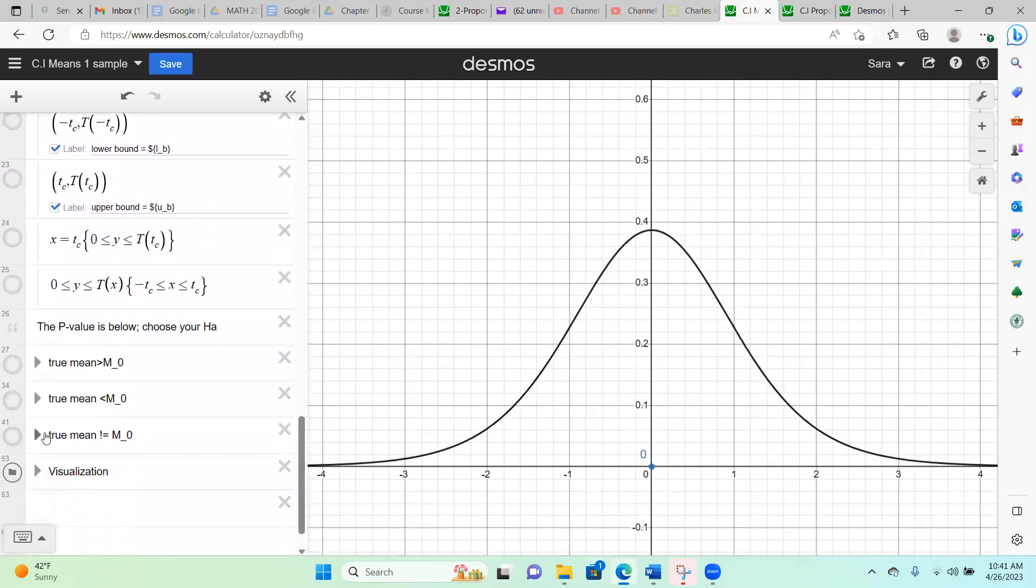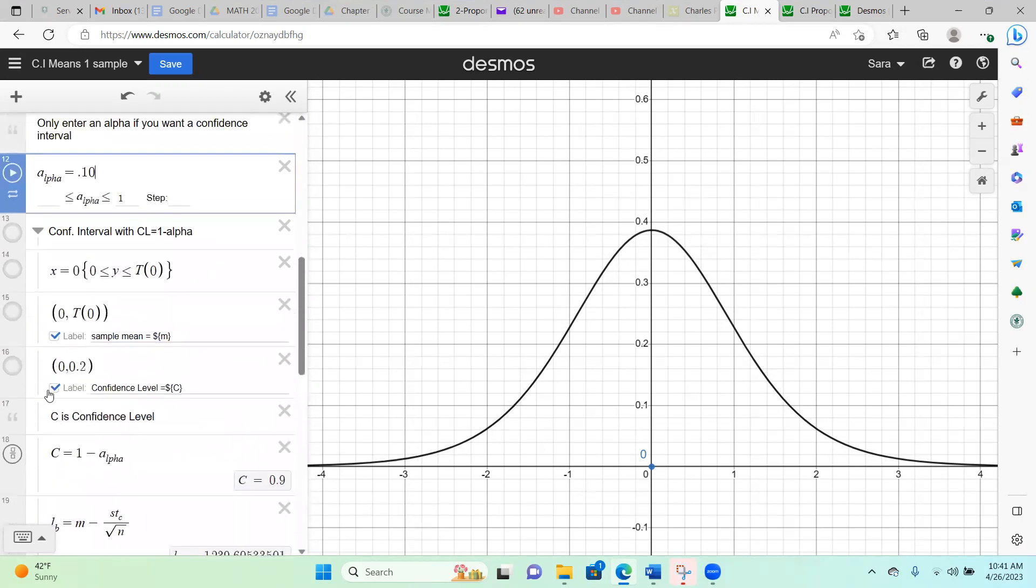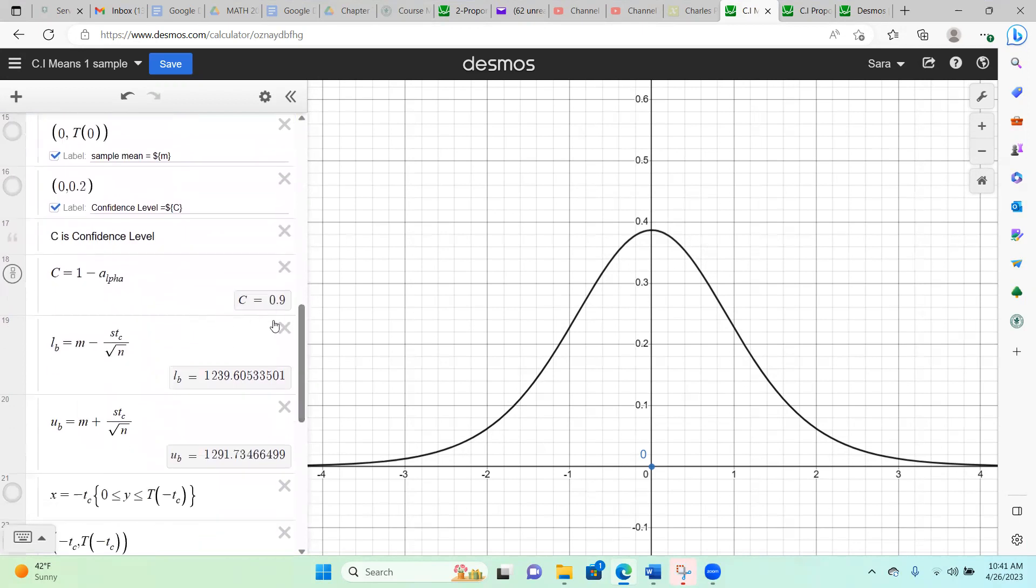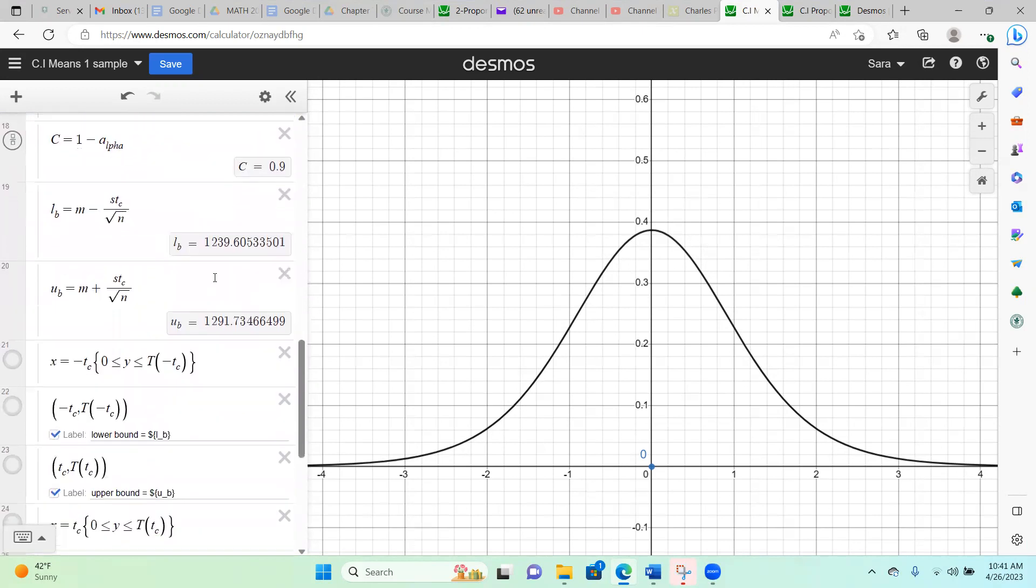It will take care of the alpha divided by two when we go down here and click on the confidence interval which was already a drop down that was already clicked. So once I click on that it goes down, it tells me that our confidence is 0.9 which is what we wanted 90%. Here is our lower bound and our upper bound. So my interval is 1239.61 rounded to two decimals, and the upper boundary for the interval is 1291.73.